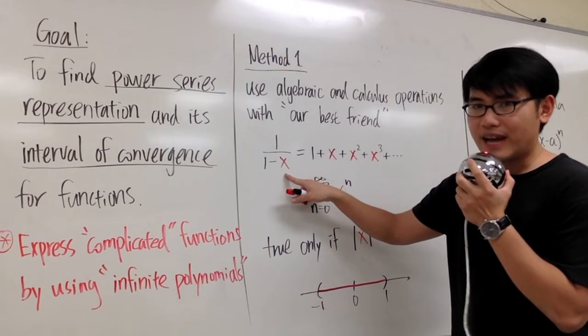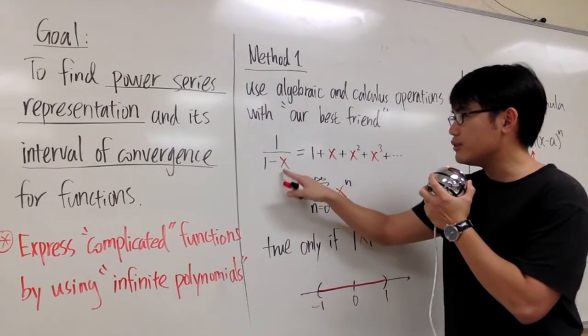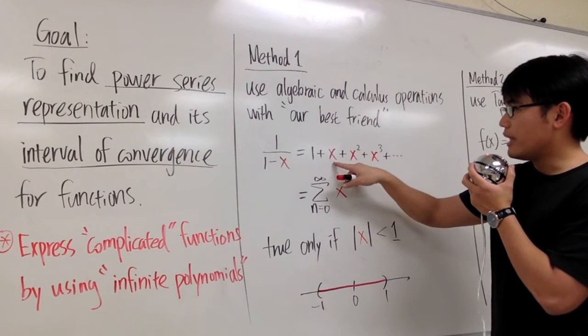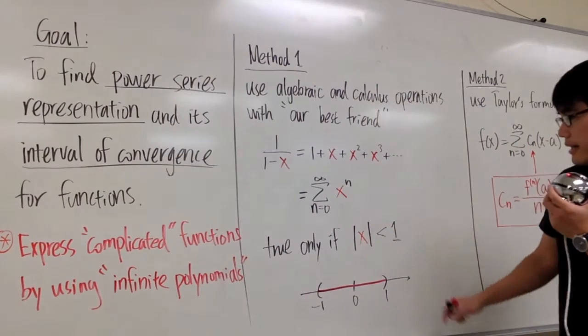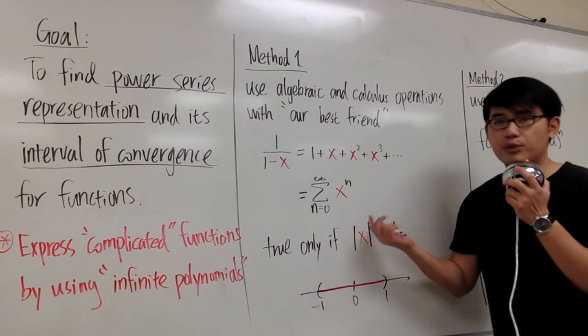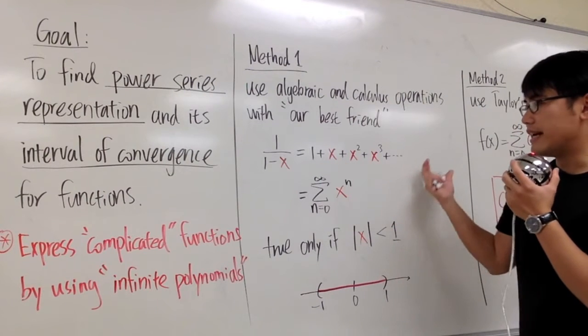x equals negative 1 half on the left-hand side right here into this x, and then we can also plug in negative 1 half into all these x on the right-hand side. And we can also plug in x equals 0.8, because 0.8 also satisfies this condition. So, this is the idea.